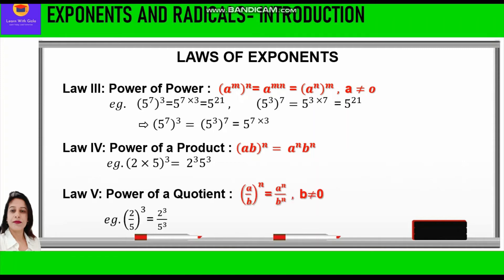The fifth law of exponents is power of a quotient. It says a upon b, raised to power n, is equal to a raised to power n upon b raised to power n, where b is not equal to 0. For example, if we have 2 upon 5, raised to power 3, we can say it is equal to 2 raised to power 3 upon 5 raised to power 3. Again, 3 is distributed between 2 and 5.